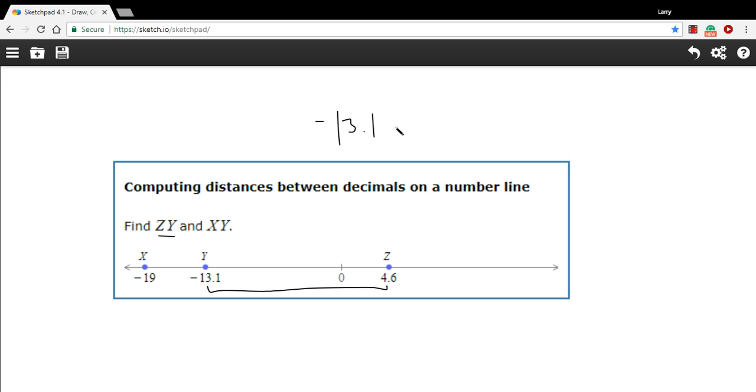So I could put negative 13.1 minus 4.6, do the subtraction, and then take the absolute value of that. So a negative 13.1 minus a 4.6 is a negative 17.7. Take the absolute value of that, you got positive 17.7.